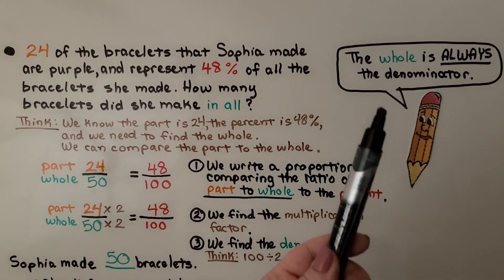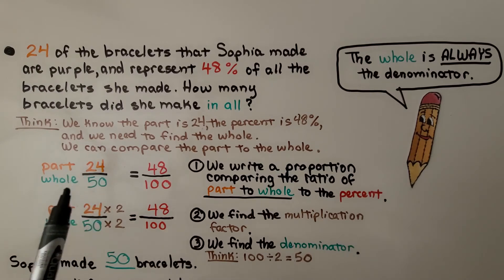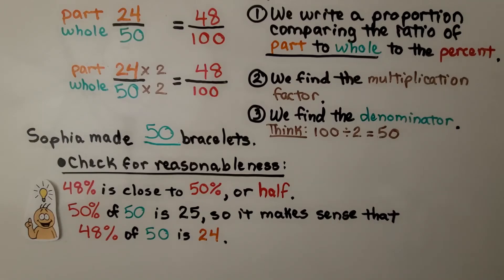Remember, the whole is always the denominator. So we found that Sophia made 50 bracelets. And we can check this for reasonableness.